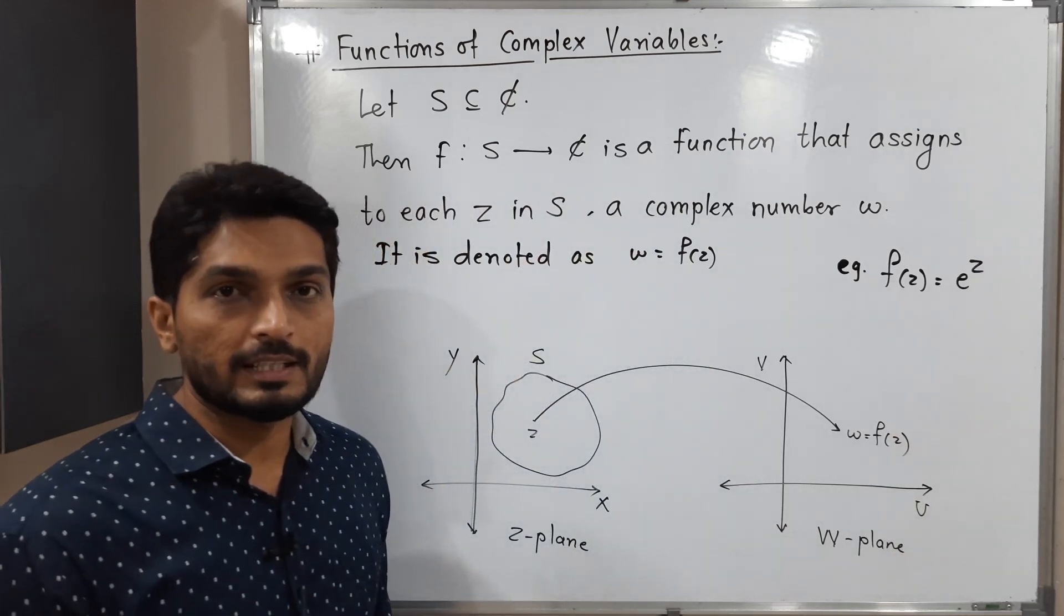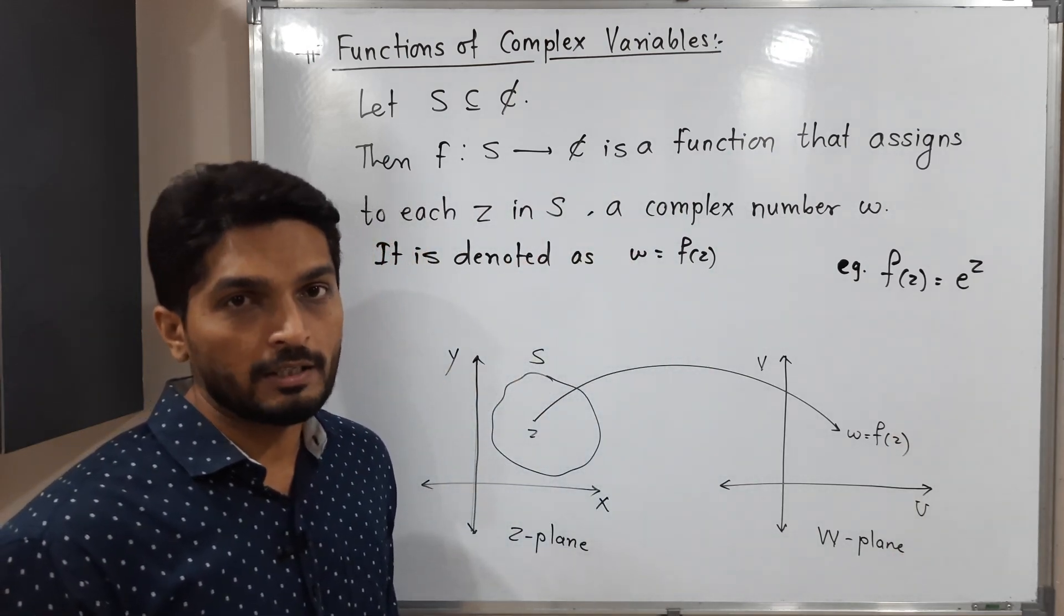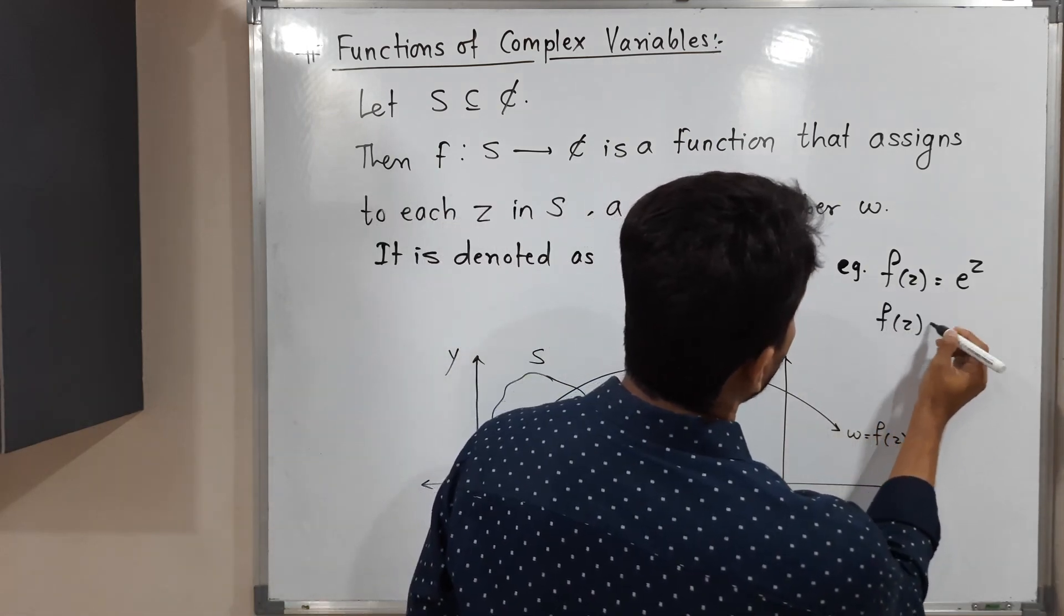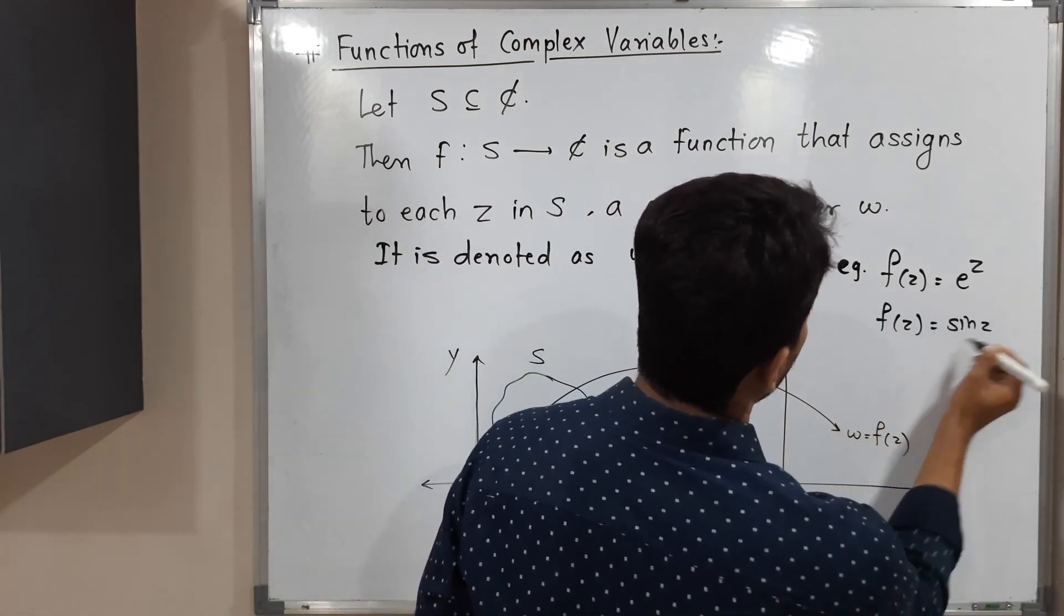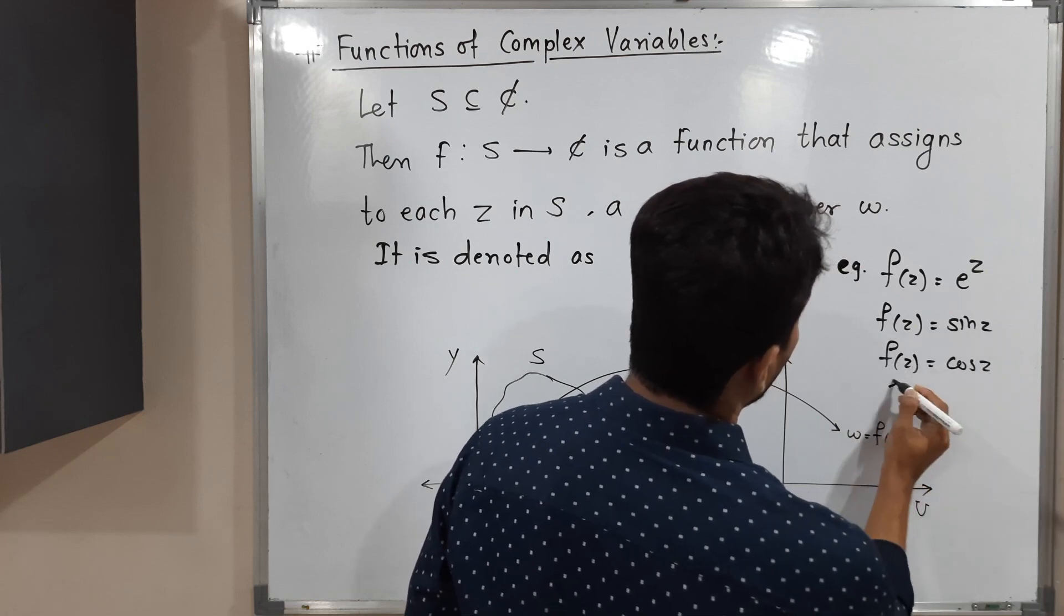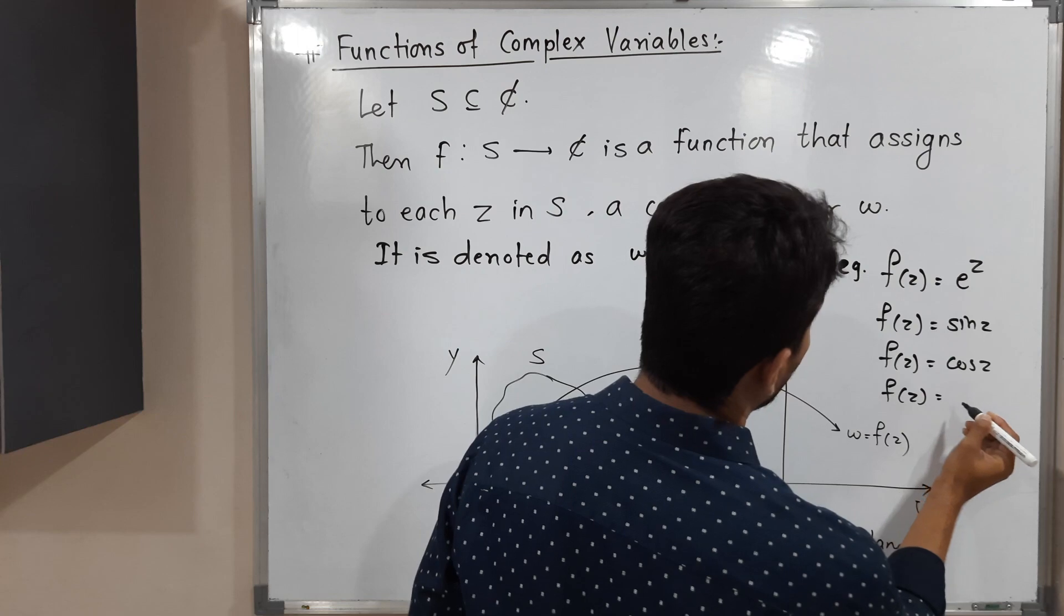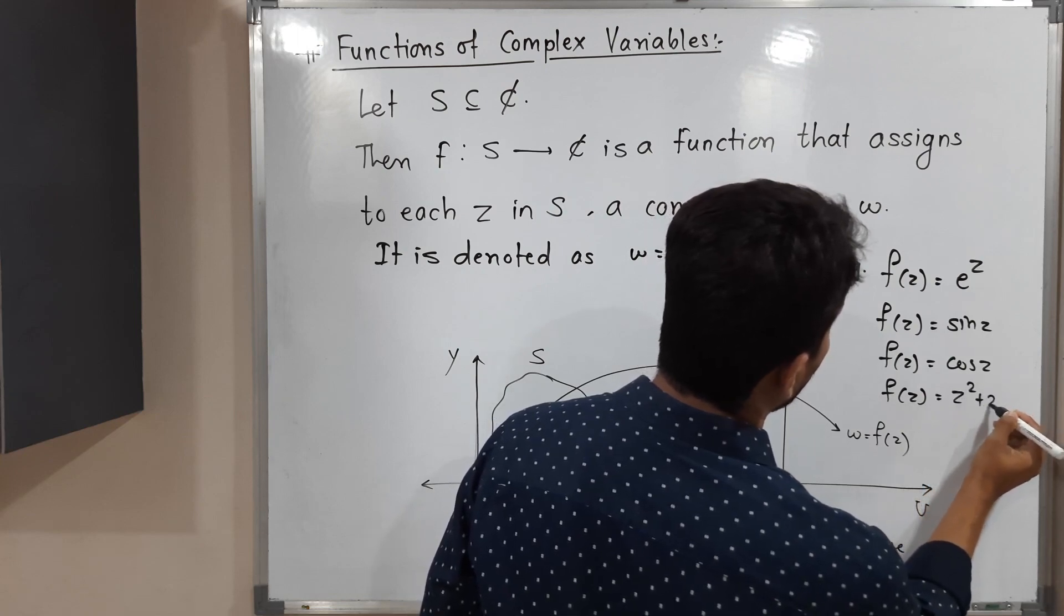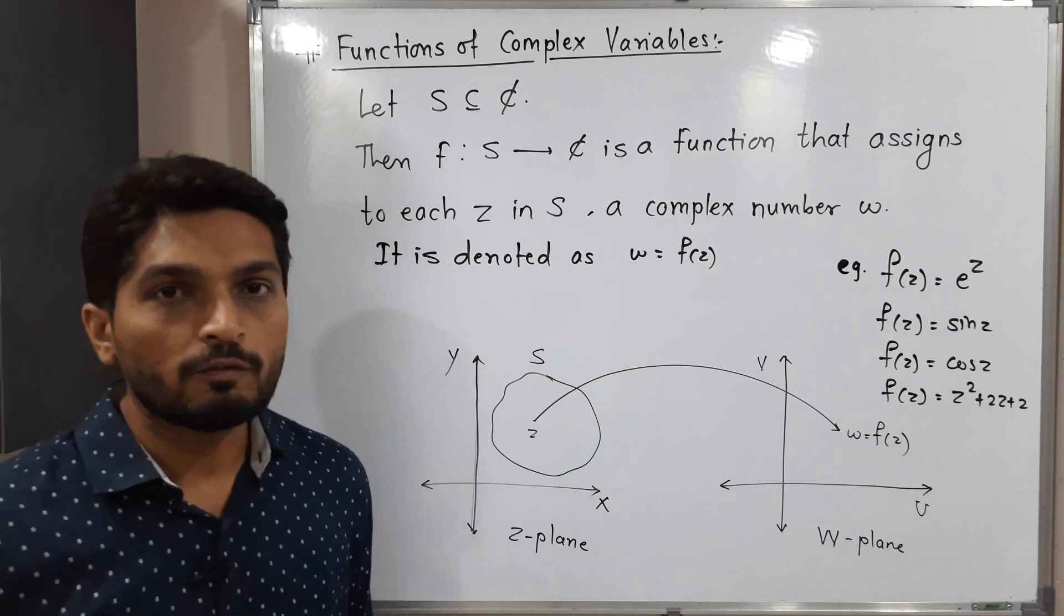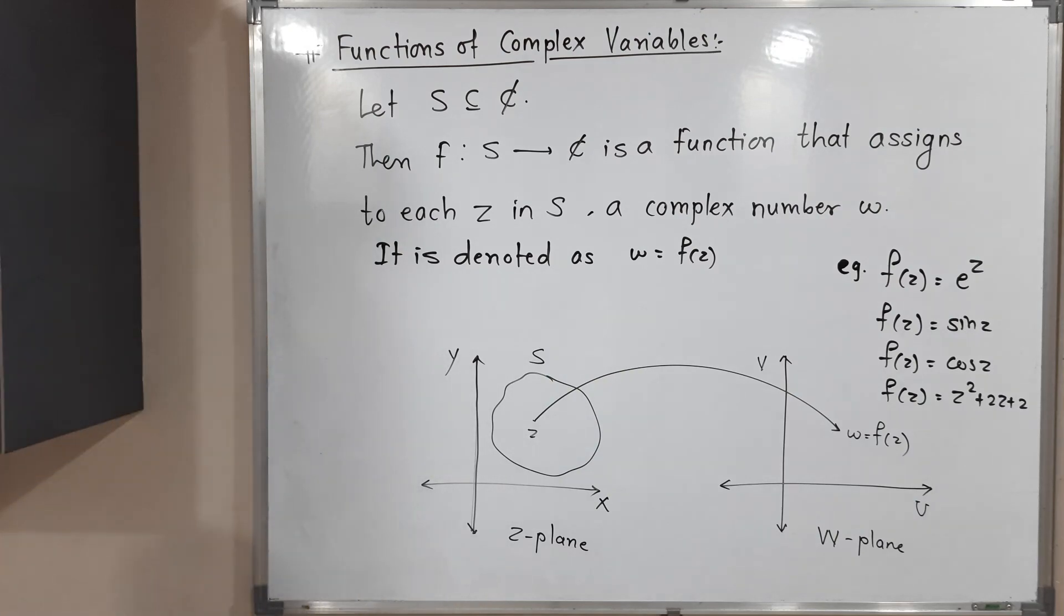We are familiar with F(X) = e^X. Similarly, we define functions of complex variables: F(Z) = sin Z, F(Z) = cos Z. You can take polynomial functions also, like F(Z) = Z² + 2Z + 2. In this way, we can define any function of complex variables.